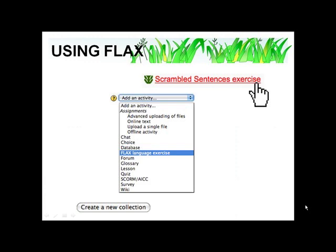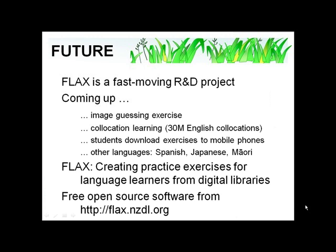But before you do, I want you to know that this is a fast-moving research and development project. We have some exciting things coming up, like exercises that involve guessing images, and ones that teach collocations — words that go together. We've built an amazing database of 30 million English collocations that students can use to improve their fluency and their writing in a chosen domain. And we have a prototype system that allows your students to download FLAX exercises — ones that you have designed — onto their mobile phone and do their assignments anywhere they want. Of course, we're also working on other languages: Spanish and Japanese, and also Māori, the language of Indigenous New Zealanders.